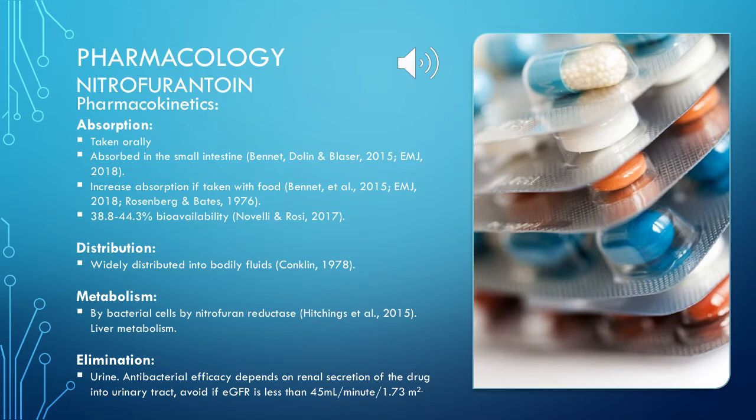Pharmacokinetics of nitrofurantoin — absorption. It is only available as an oral medication (Joint Formulary Committee 2020). Taken orally, it is 40 to 50% absorbed, principally in the small intestine, and has increased absorption when taken with food or agents that delay gastric emptying. It has a 38.8 to 44.3% bioavailability.